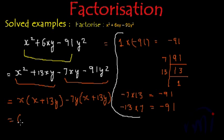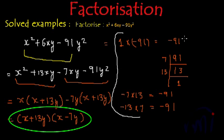And now we can take x plus 13y as common and inside the bracket, we will have x minus 7y, right? So these are the two factors of x square plus 6xy plus 91y square.